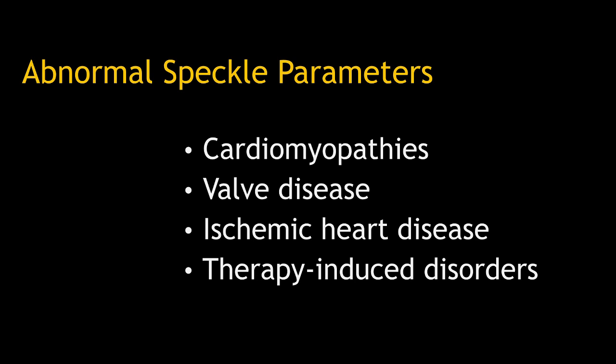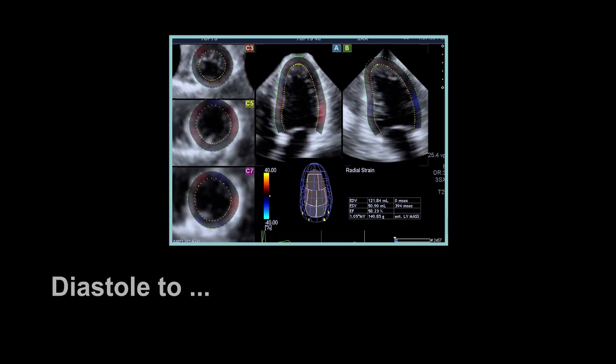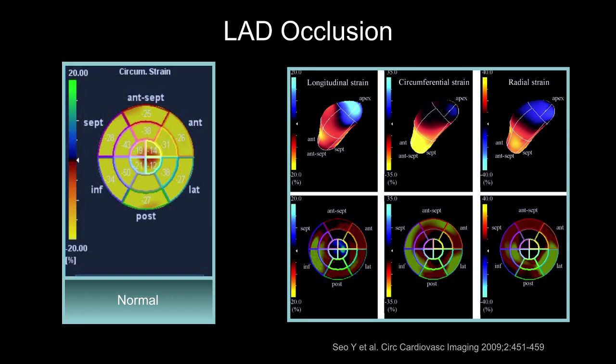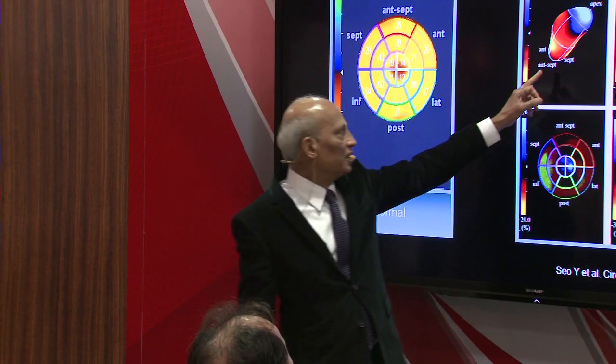Abnormalities in myocardial function have been described in a variety of disorders — valve disease, different forms of cardiomyopathy, ischemic heart disease, chemotherapy-induced disorder, radiation-induced disorder, and so forth. Today we focus on ischemic heart disease. With speckle tracking, a color code changes from diastole to systole like a weather map. Here is an example of an LAD occlusion in an animal model using a polar map display: while most regions contract well, the apex is markedly hypokinetic.